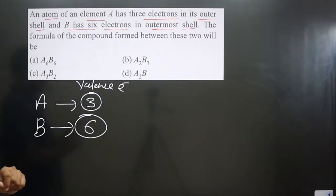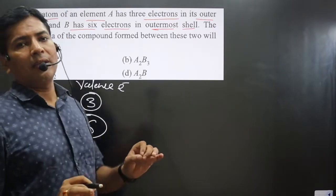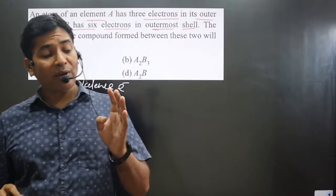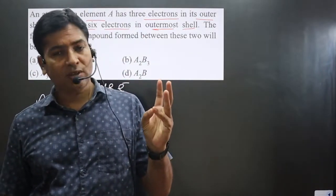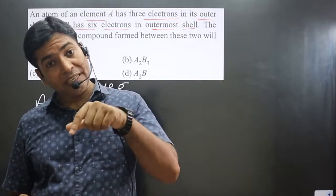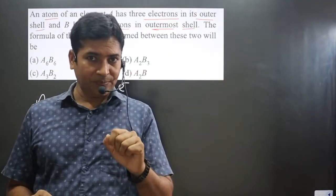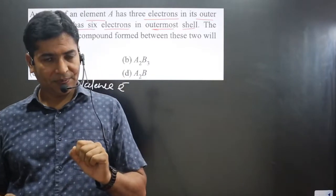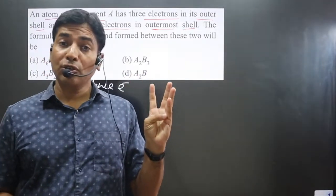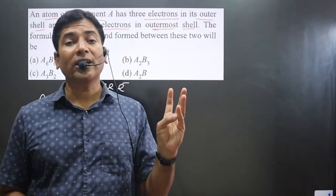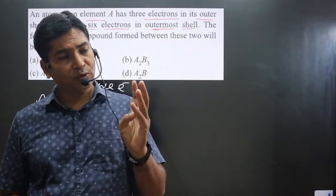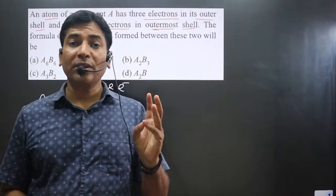Now pay attention carefully. In general, elements having valence electrons one, two or three, they have tendency to lose the electrons because they are metals. Like first group elements lose one electron, second group elements lose two electrons, and 13 group elements boron, aluminum, gallium, they lose three electrons.